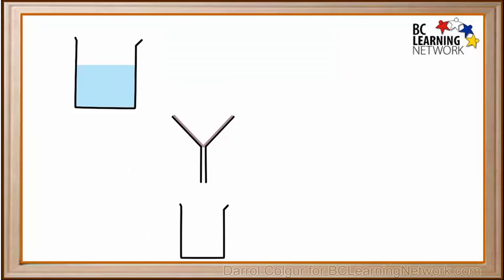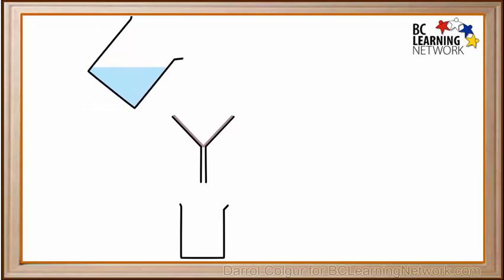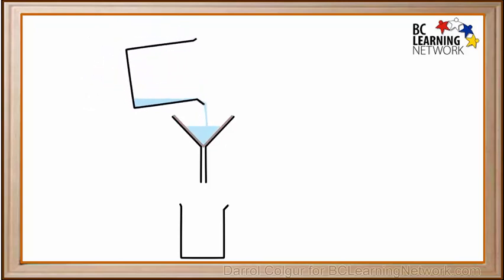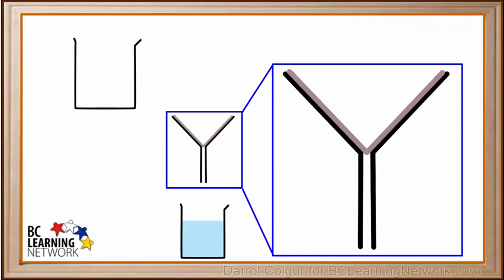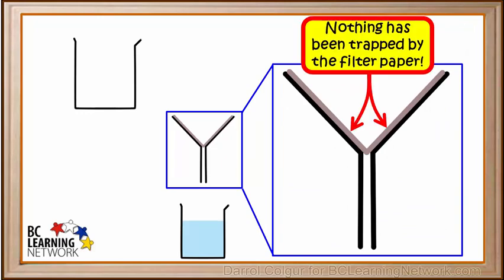We place a beaker on the bottom to catch any liquid that runs through the filter paper. Now let's see what happens when we pour the window cleaner solution into the funnel. We see that all of the solution runs through the filter paper into the beaker at the bottom. If we take a closer look at the filter paper in the funnel now, we see that nothing has been trapped by the filter paper. This is true for all solutions. Even though solutions are mixtures, these mixtures cannot be separated by pouring them through a normal filter.